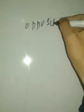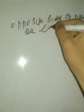The first term is Theorem 8.2: in a parallelogram, opposite sides are equal. We have to prove this theorem, so we will write: opposite sides of a parallelogram are equal. This is Theorem 8.2, so let's prove it.